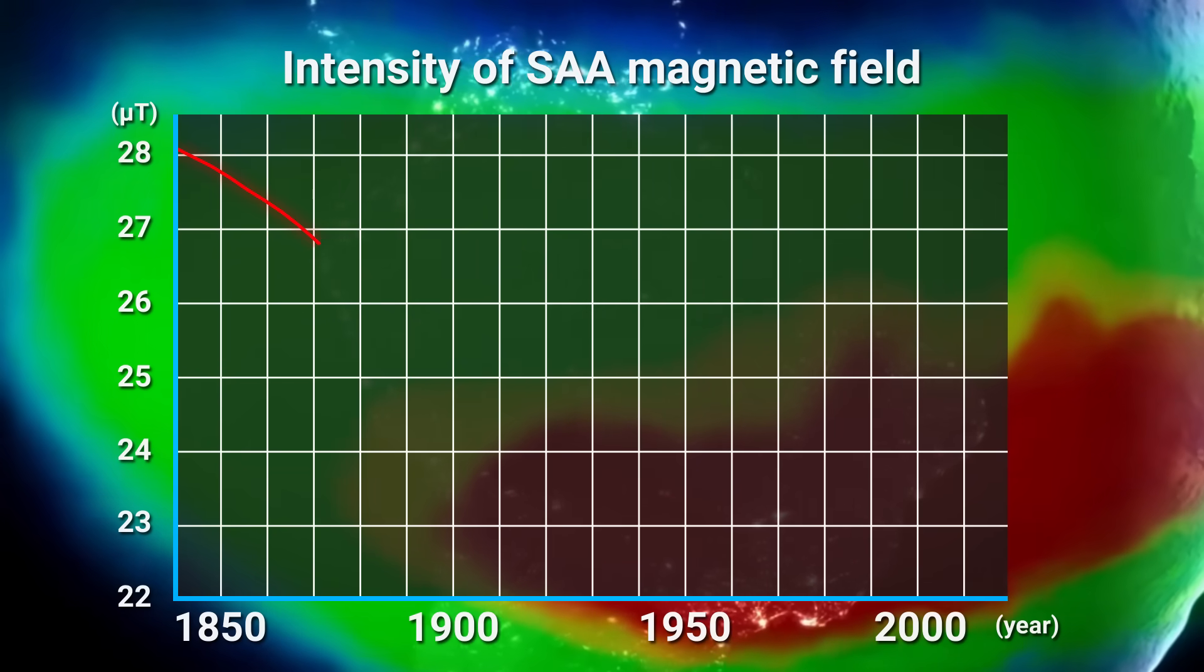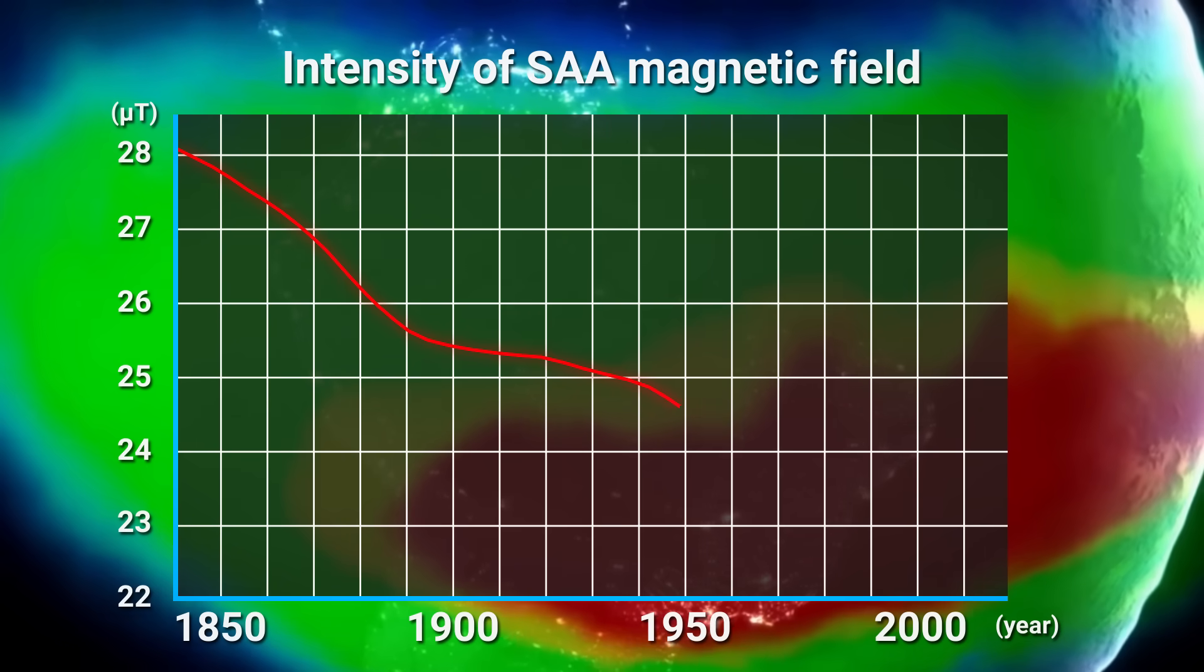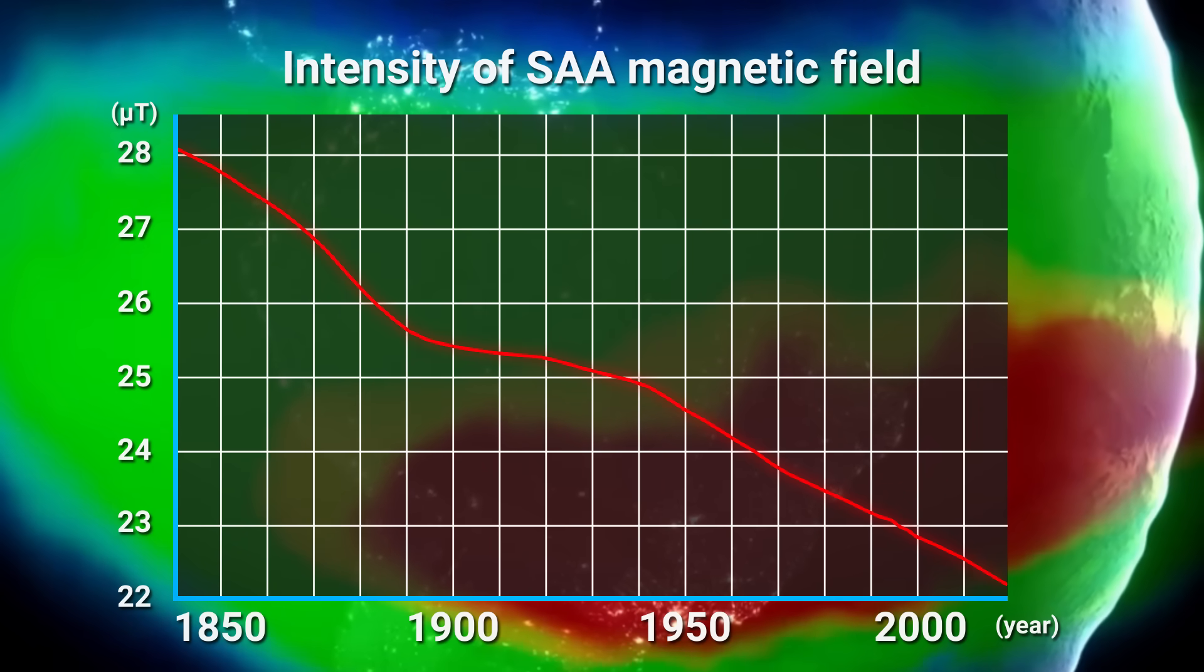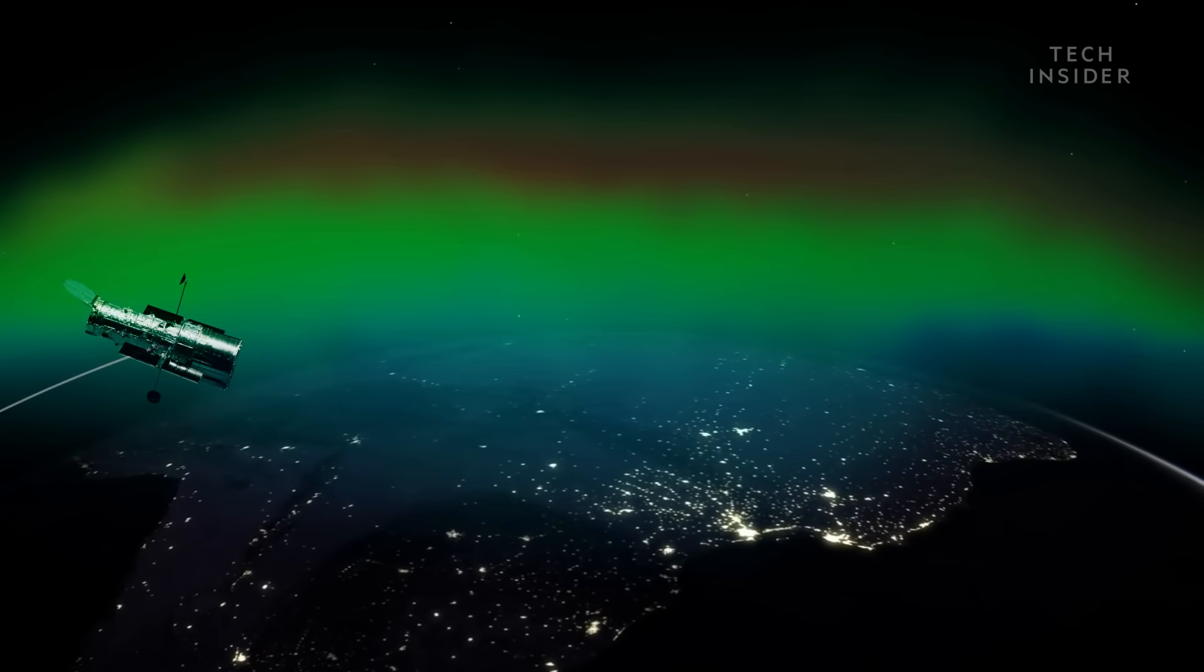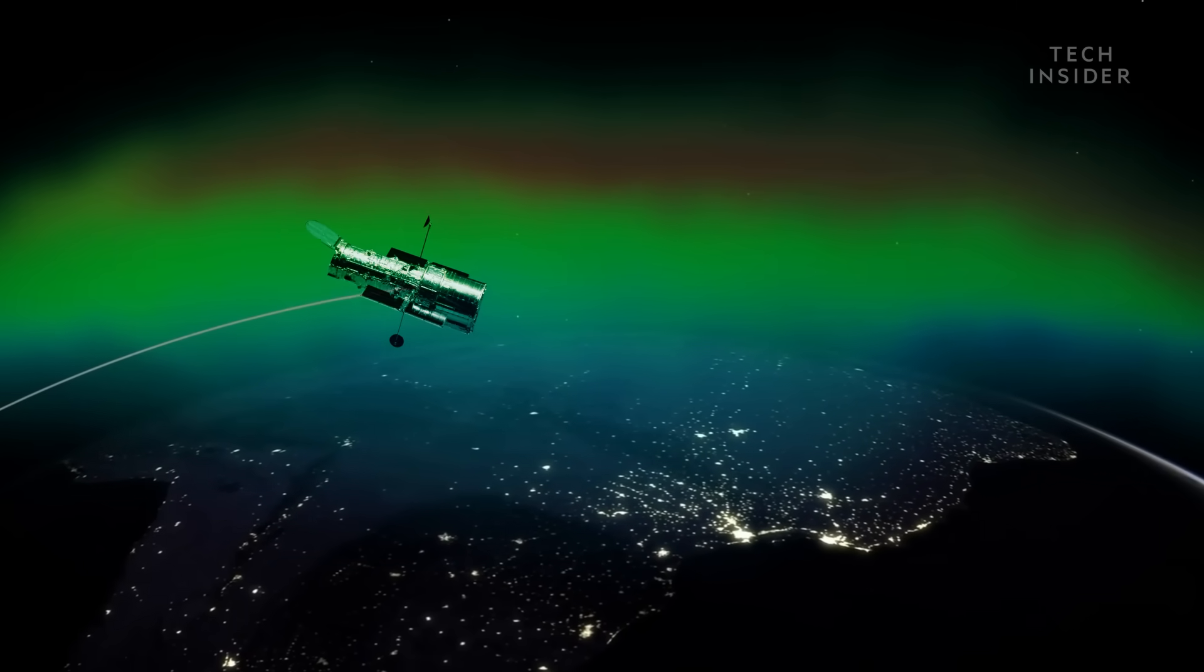And scientists say that's one reason why the field has been steadily weakening since 1840. As a result, the Hubble Space Telescope and other satellites often shut down their sensitive electronics as they pass over the area.